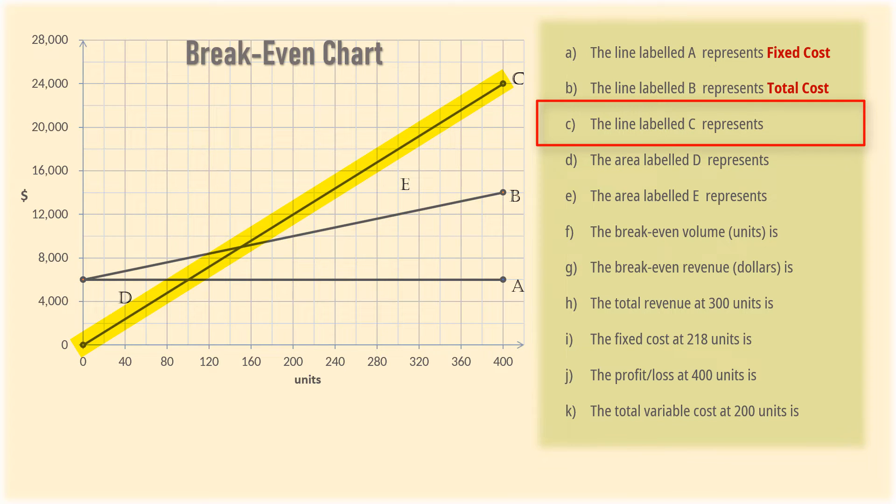Line C has a value of zero when units is zero and increases in proportion to units afterwards. Recall that total revenue is zero when zero units are sold, and then increases in proportion to units of output. Line C therefore must be the total revenue line.